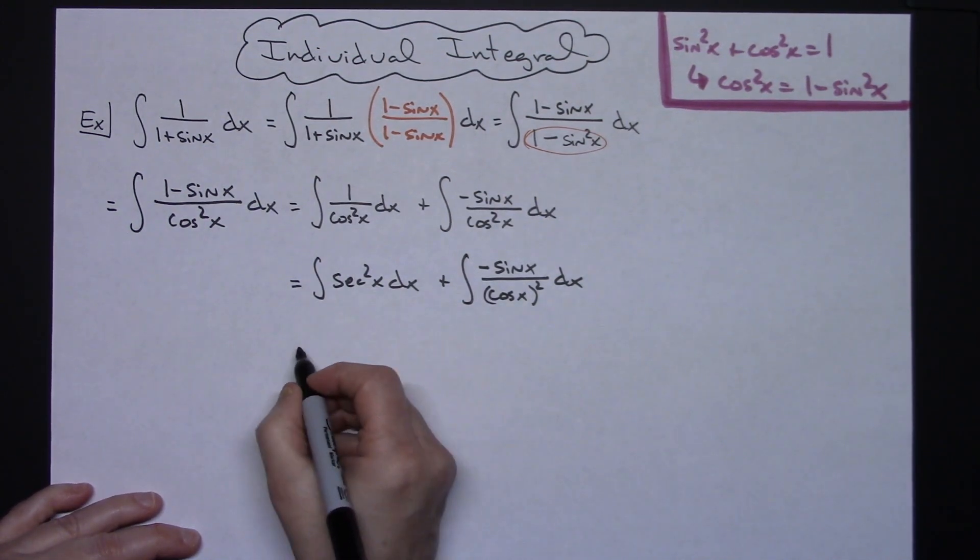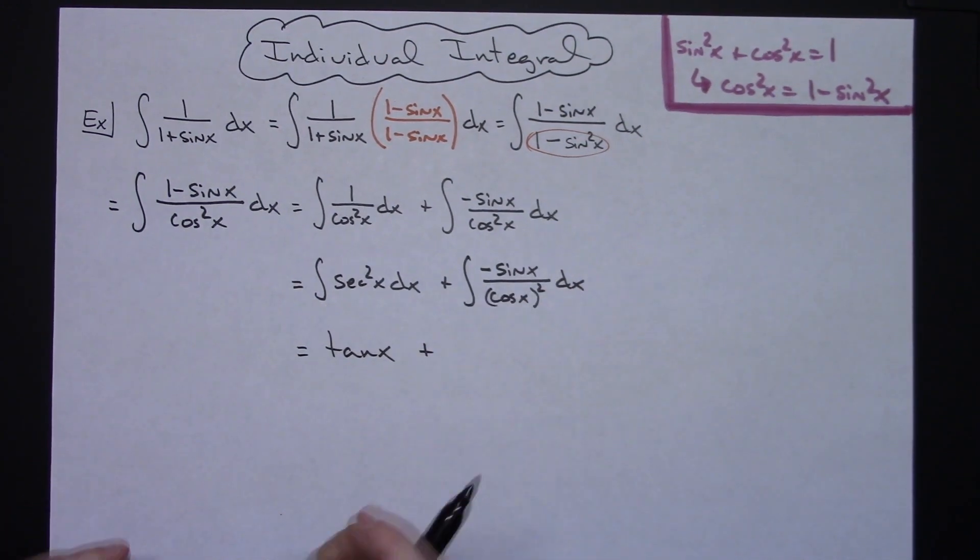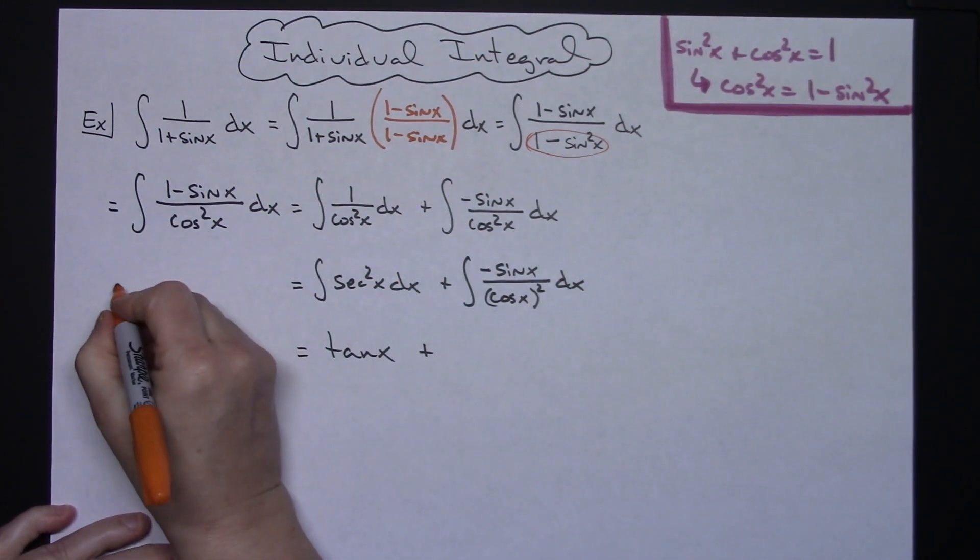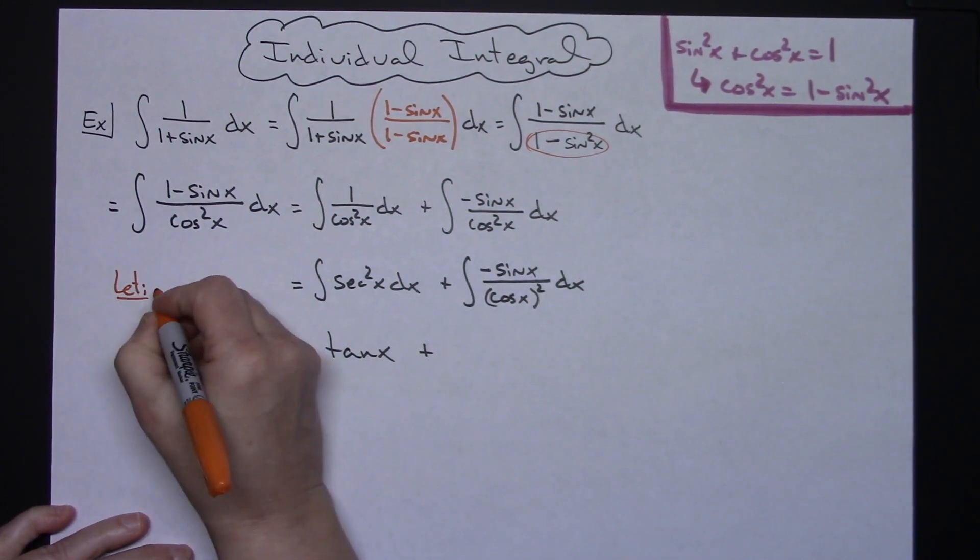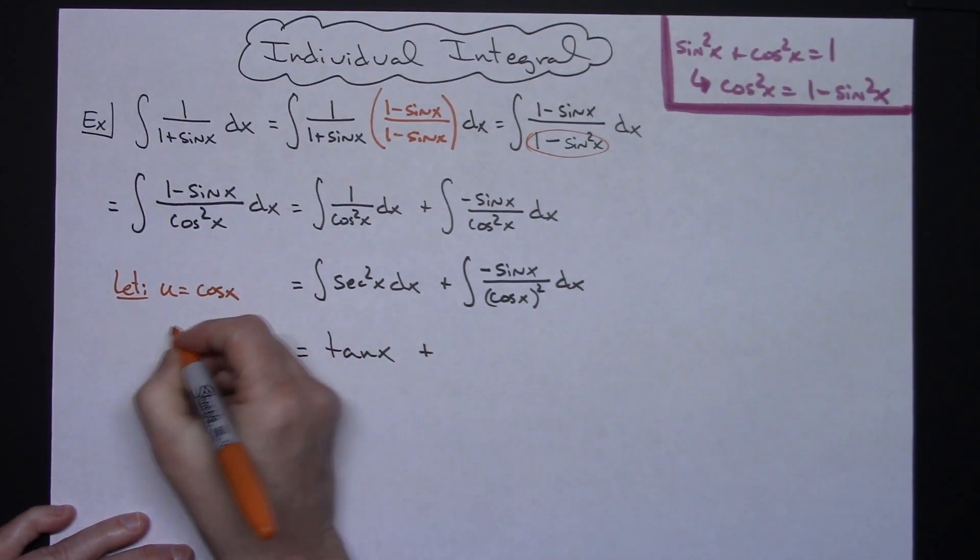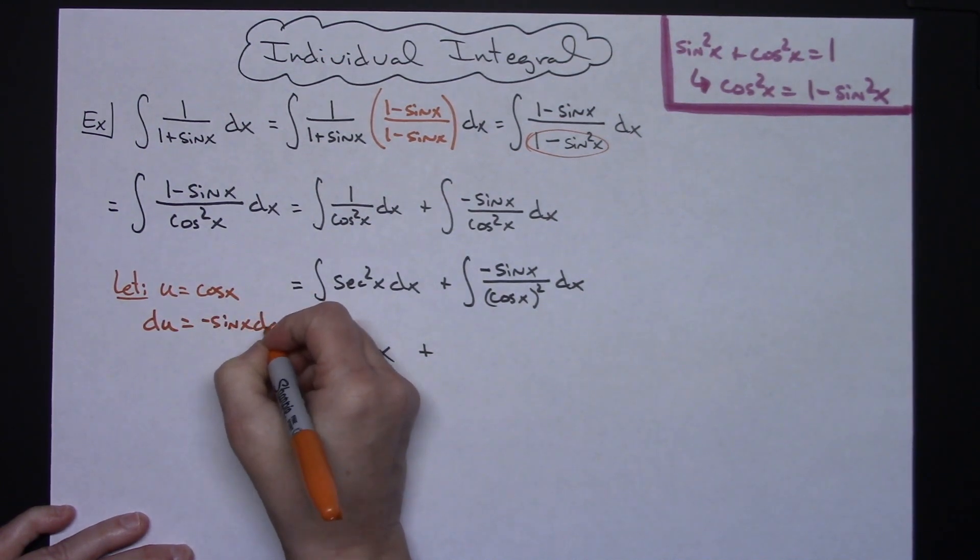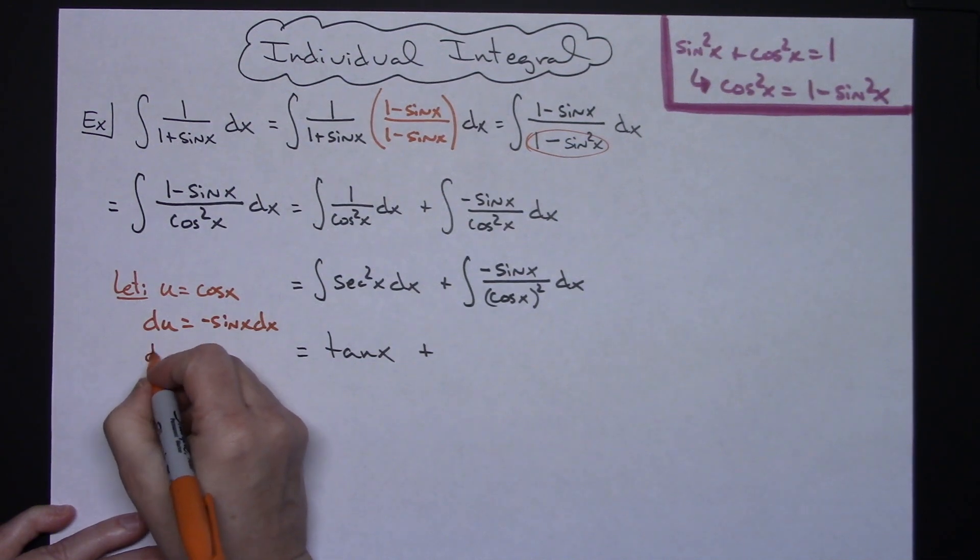All right now this integrates really nicely to a tangent x without a whole lot of work there. Okay now on this part right here we are going to do a u substitution so I think I'm going to do it over here. We're going to let u be this inside function so cosine x. Taking the derivative of both sides du equals negative sine x dx and then going ahead and solving for that dx we'll have a du over a minus sine x equals the dx.